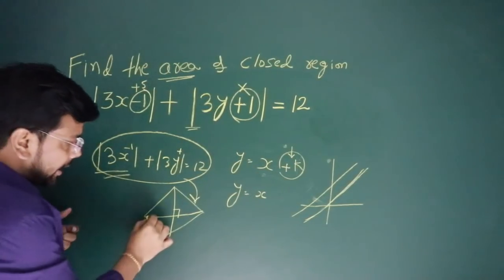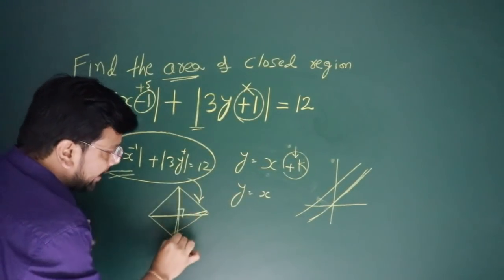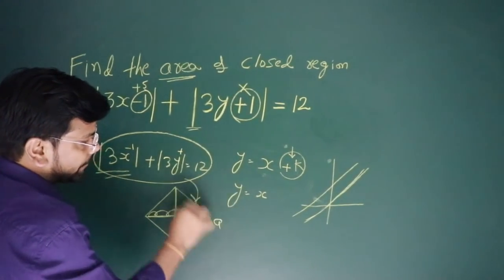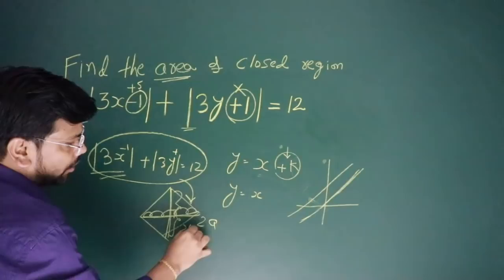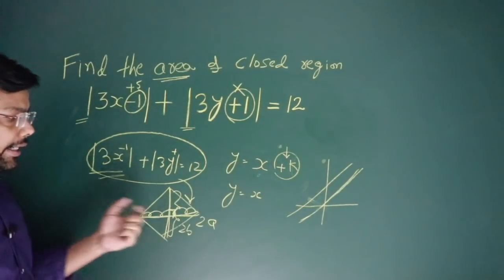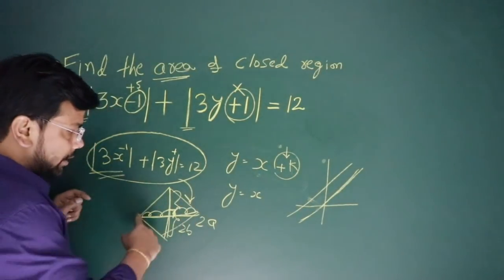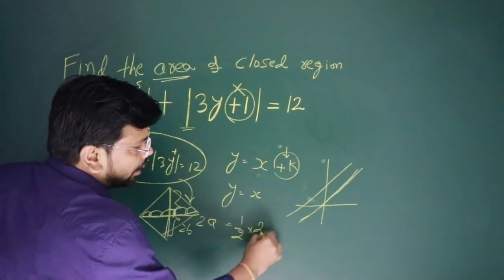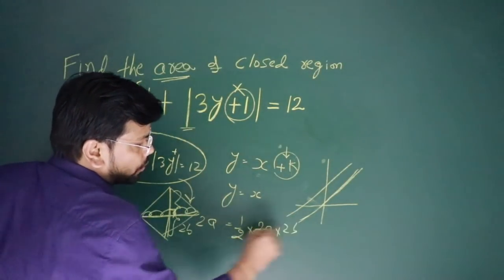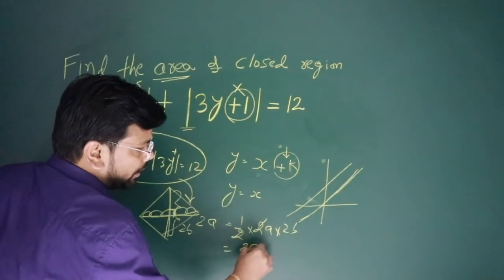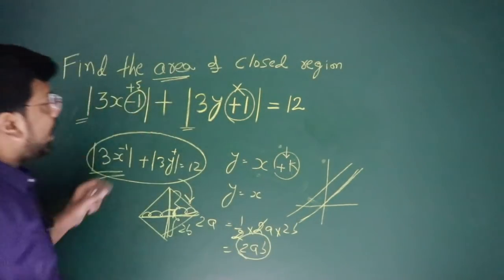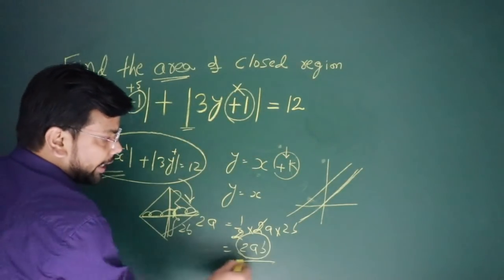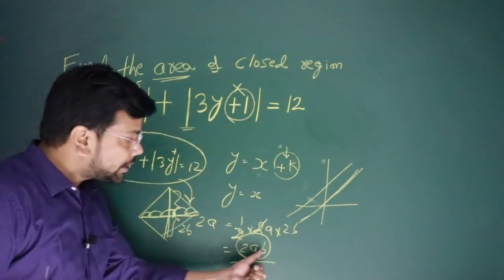Now what do we have to make? We have to make this area. If I tell you this is 2a, this is 2b, and diagonals are 90 degrees. Area of the figure where diagonals are perpendicular is half × d1 × d2. Cancel out, this is 2 × a × b. So the answer to any such question is 2ab.